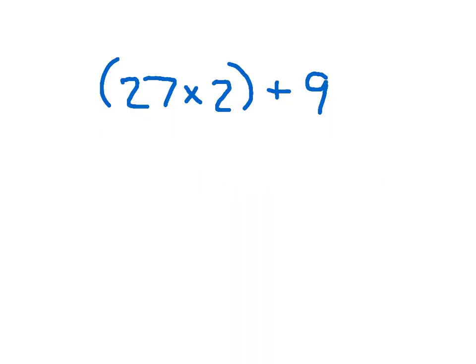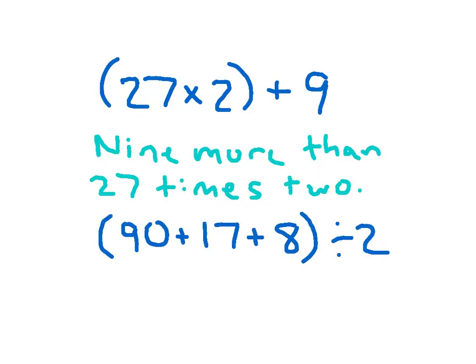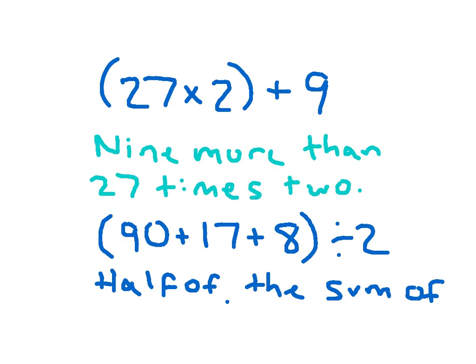Can you describe this next expression in words? If you want to pause the video to write it out, you may. Here is a possible solution — just be very careful to make sure you're describing the situation that is shown. For instance, I could describe this as half of the sum of all three numbers. I'll write it out: half of the sum of 90, 17, and 8.